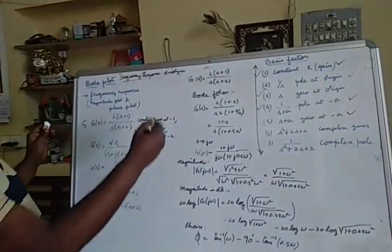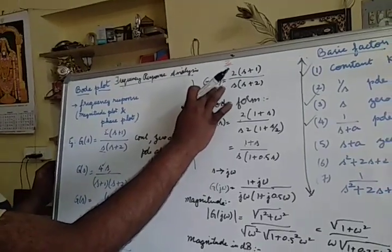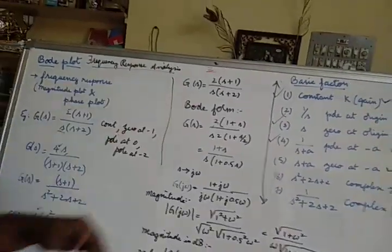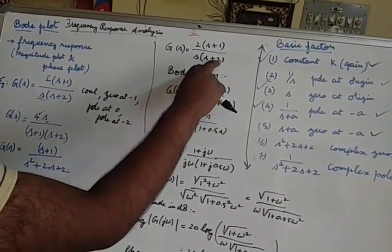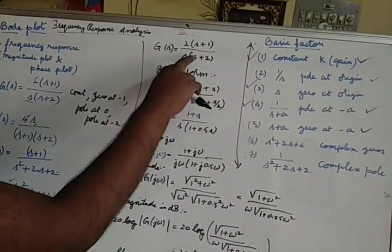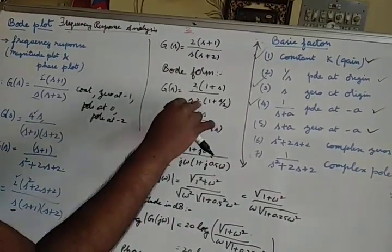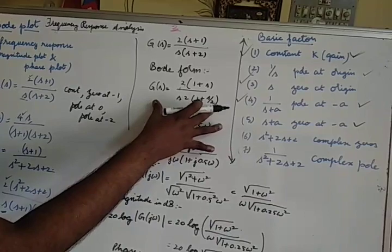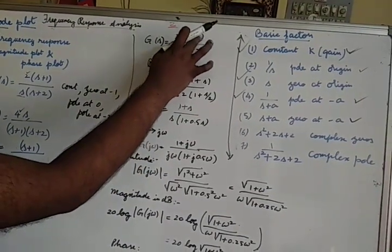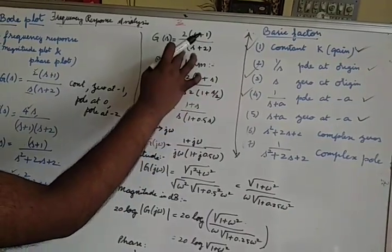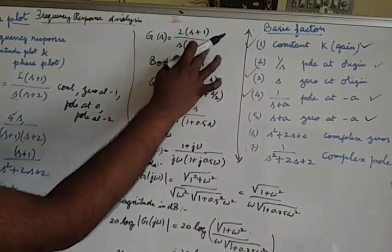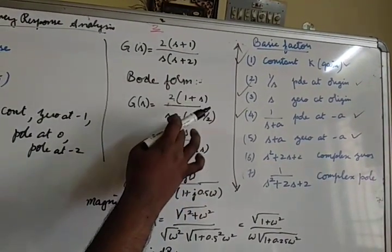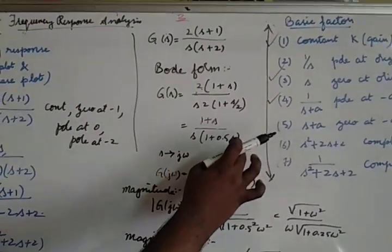We take the example G(s) = 2(s+1) / [s(s+2)]. First we convert to Bode form, which means writing everything in the (1 + s/a) format. Here s+2 becomes 2(1 + s/2) when we take 2 outside. The (s+1) is already in Bode form. So we get (1 + s) / [s · (1 + 0.5s)], and the twos cancel out.